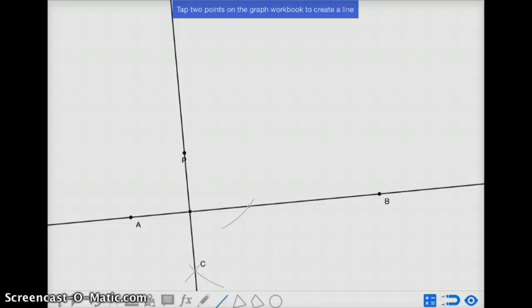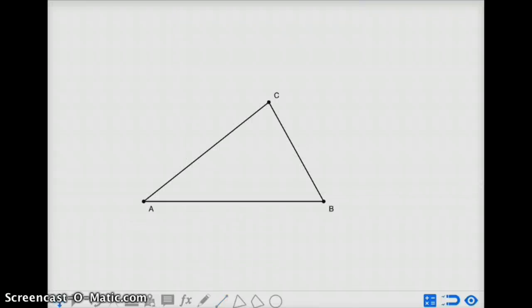If we were to start with a triangle, and want to create a line segment perpendicular to AB that passes through C, it's the same thing that we just did.